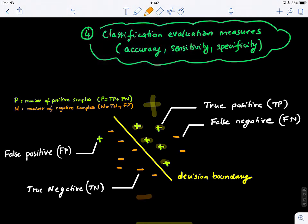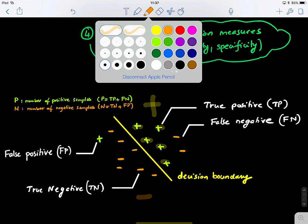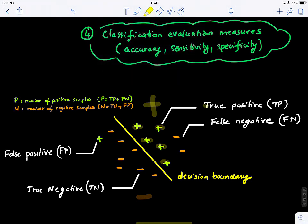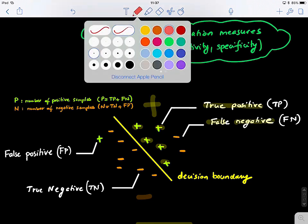And let's look at these definitions. So the first definition is of a true positive point. So this is a positive point that lies on the positive side of the boundary, so it's correctly classified. Then we have what we call a false negative. A false negative, it's not truly classified.